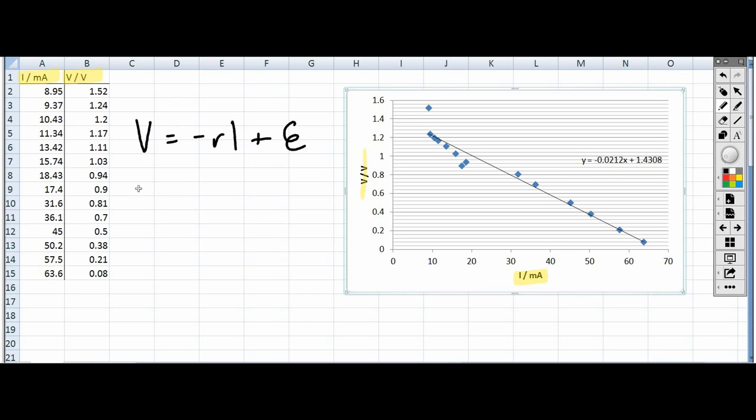Well, I said that's similar to an equation for a straight line graph which is Y equals MX plus C. Let's have a little think about that. That means that minus R is the same as M, it's the gradient, and the Y intercept is the EMF.